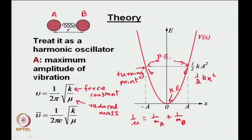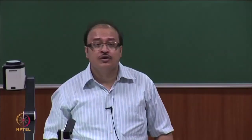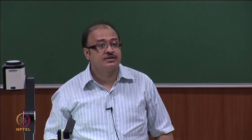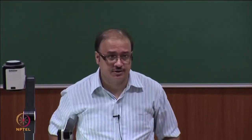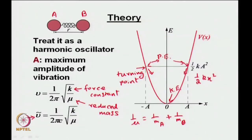This is the characteristic vibration frequency. When talking about vibration bands, we mostly express in terms of wave numbers rather than frequency. The wave number is given by ν̃ = (1/2πc)√(k/μ), in units of cm⁻¹. We still refer to it as frequency, though it is not absolutely correct in terms of nomenclature.